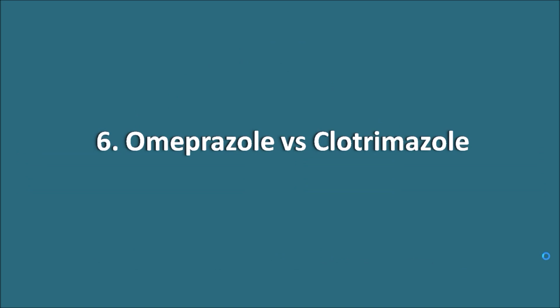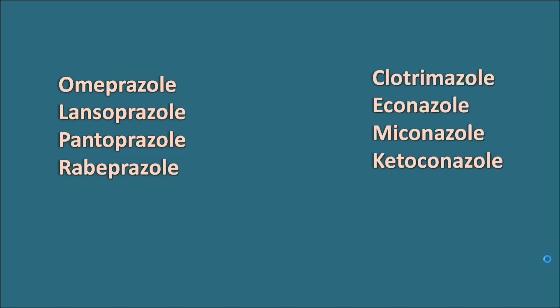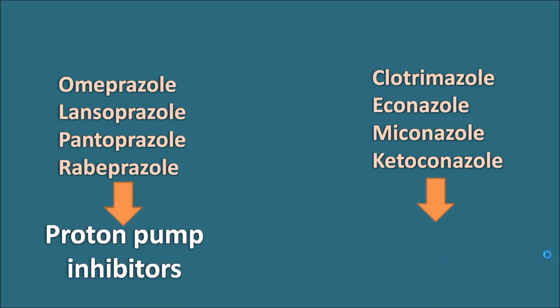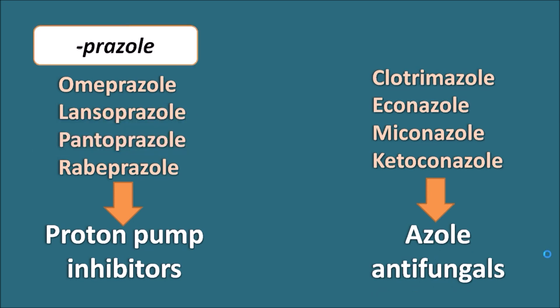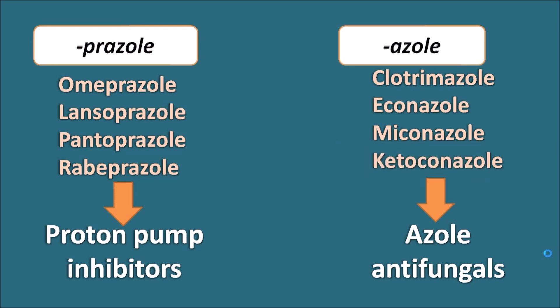The sixth pair is omeprazole versus clotrimazole. Drugs like omeprazole, lansoprazole, pantoprazole, and rabeprazole are proton pump inhibitors, while clotrimazole, econazole, miconazole, and ketoconazole are azole antifungals. All share the '-azole' suffix, but a subtle difference exists: proton pump inhibitors end in '-prazole', whereas azole antifungals end in just '-azole'.